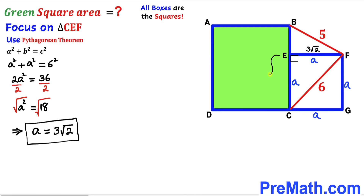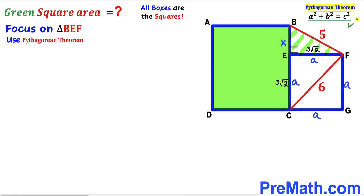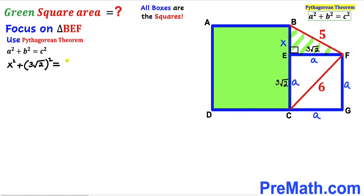This side CE turns out to be 3√2 units as well. Now we are going to focus on right triangle BEF. This angle is a 90 degree angle, and I am going to label segment BE as X. We will apply the Pythagorean theorem on this triangle: A² + B² = C². Our hypotenuse is 5, and our two other legs are X and 3√2.